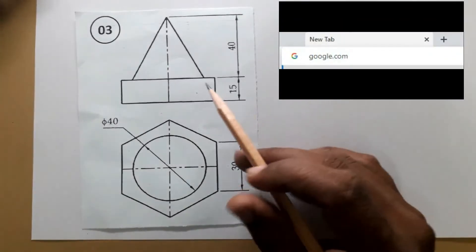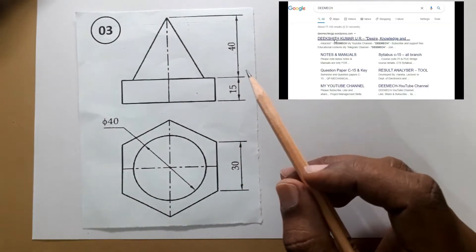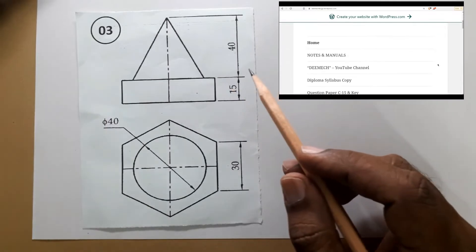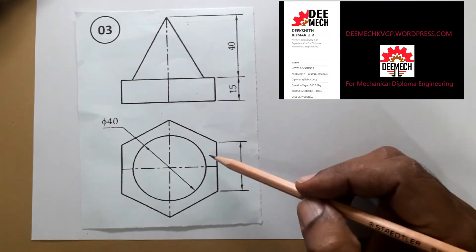Hello students, Dima Ke Swagata, Nanu Dikshit Kumar. This is orthographic to isometric view. Given problem: front view and top view.